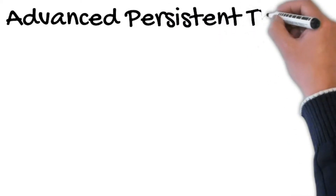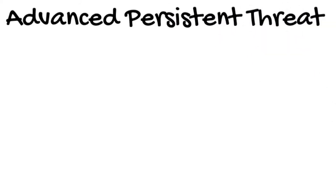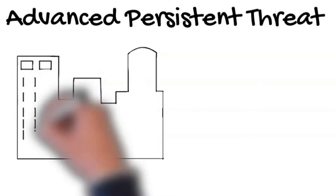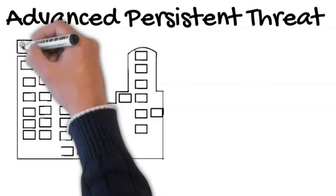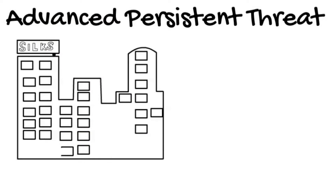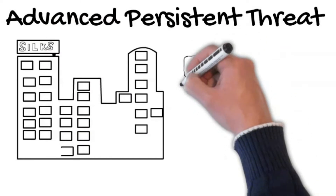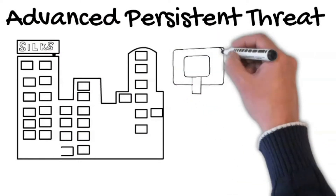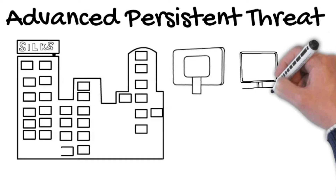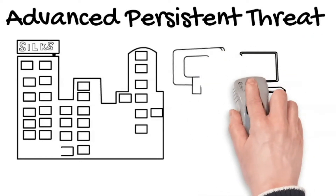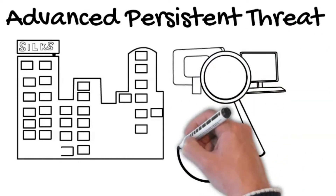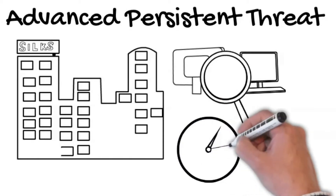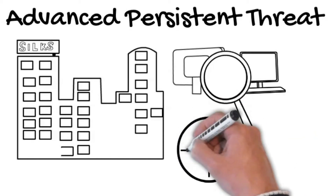Advanced Persistent Threats refer to very dangerous threats that greatly affect any enterprise or brand which is targeted. Also referred to as APT, Advanced Persistent Threats are attacks through which unauthorized parties gain access to a network or system and stay within the system for a long time undetected.